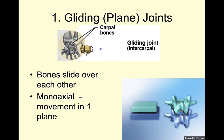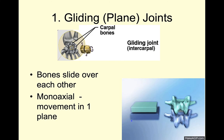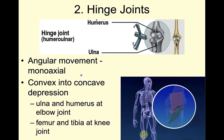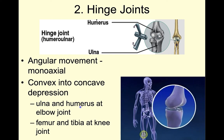Our first type of synovial joints are the gliding joints, where bones are sliding over top of each other. We see these in our carpal bones; in the bottom right you can see two vertebrae with a little bit of movement where they're sliding past each other. We can call these monoaxial — they have movement in one plane. Next we have our hinge joints, which were our humerus and ulna — the humeroulnar joint. These are also monoaxial, like a hinge on a door: a convex surface going into a concave depression. At our elbows we see the ulna and the humerus; at our knee joints we have our femur and our tibia.